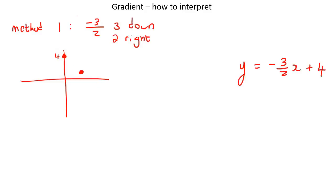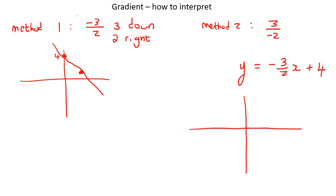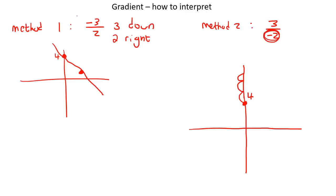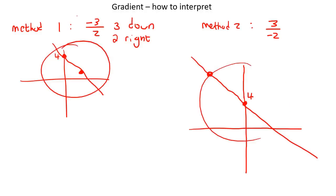If we connect a line through those points, that gives us our line. Method number 2: you could think of it as 3 over negative 2 — so 3 up and 2 to the left. Starting from positive 4, go 3 up — 1, 2, 3 — then 2 to the left — 1, 2. The dot is in a different place, but as soon as you connect the line through those 2 points, it gives the exact same shape as before.